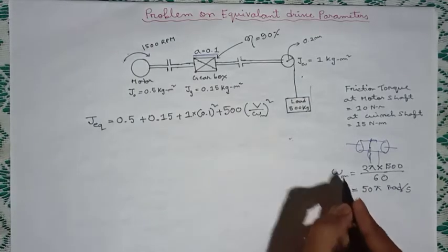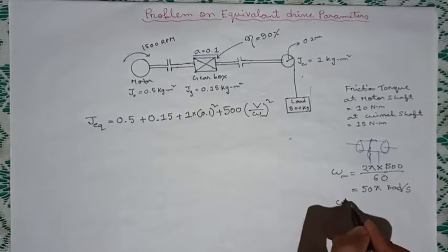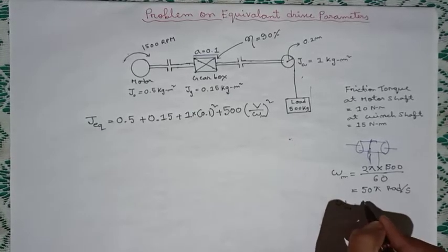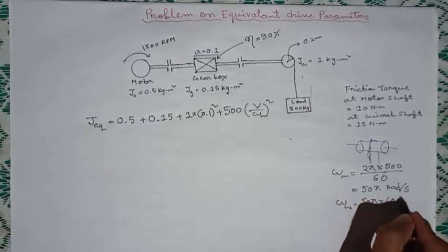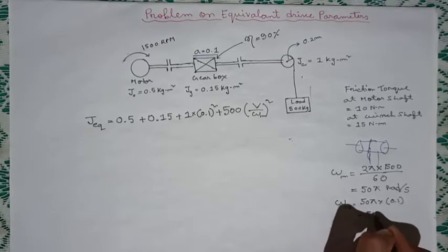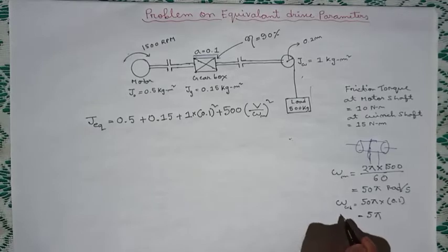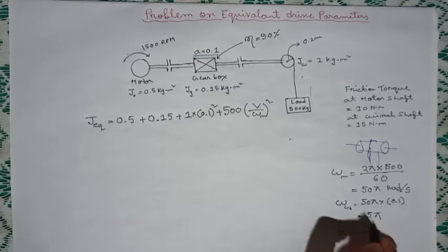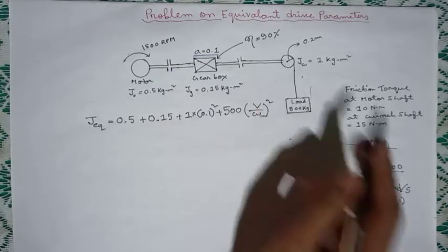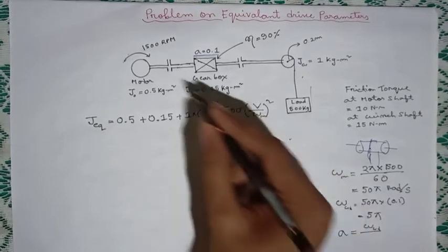Now this speed, the speed of this wind drum will be this multiplied by the gear ratio. That is, speed of the wind drum will be 50 pi times 0.1, that is 5 pi. For this, in the previous video I have told that gear ratio a is equal to speed of the load side, that is the speed of the wind drum, divided by the speed of the motor. So from this we are getting this.